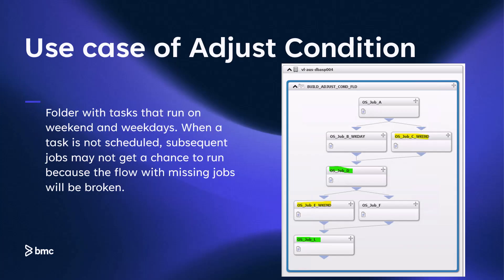The first use case involves ordering a smart folder where some of the jobs are not scheduled to run on a given day. For instance, certain jobs are set to run on weekdays while others are scheduled for weekends. In this job flow, jobs that run on weekends are highlighted in yellow. Consequently, on weekdays, the subsequent job in the flow, shown in green, cannot run due to the absence of events that would have been generated by the weekend job.